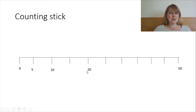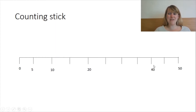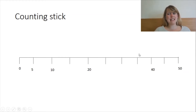Now this is a really tricky one. Could you double 20? Yes, that's right, 40. 8 times 5 is 40. So if 4 times 5 is 20, we double it and 8 times 5 is 40.